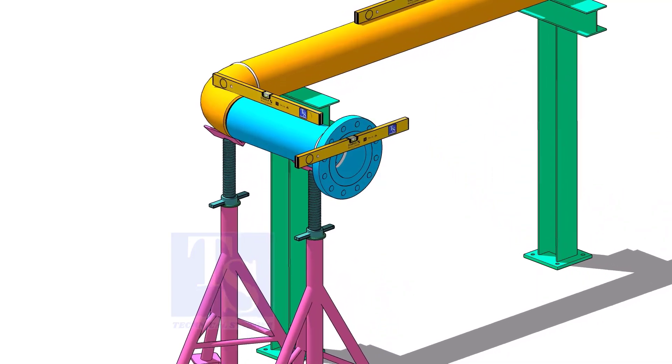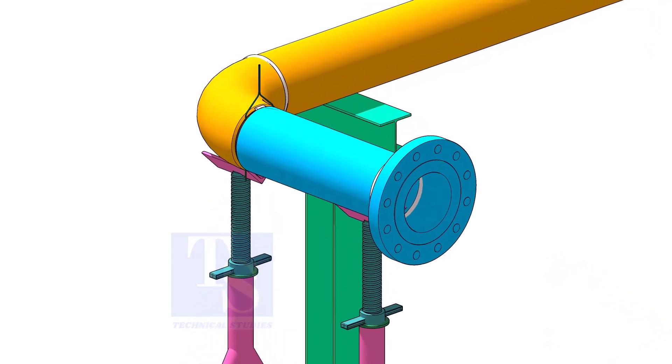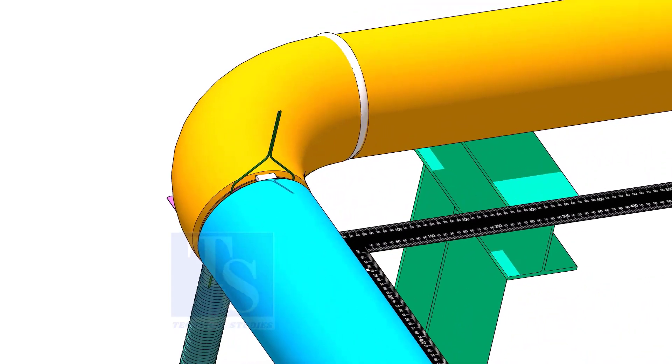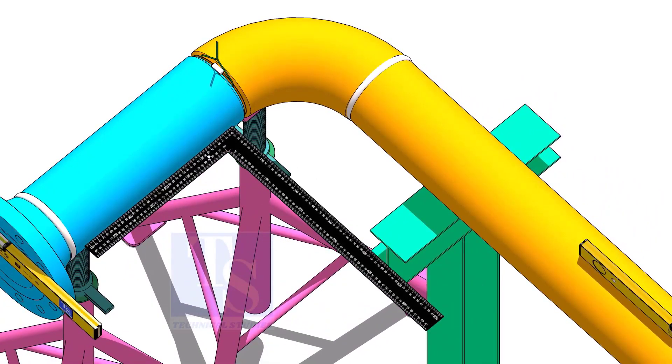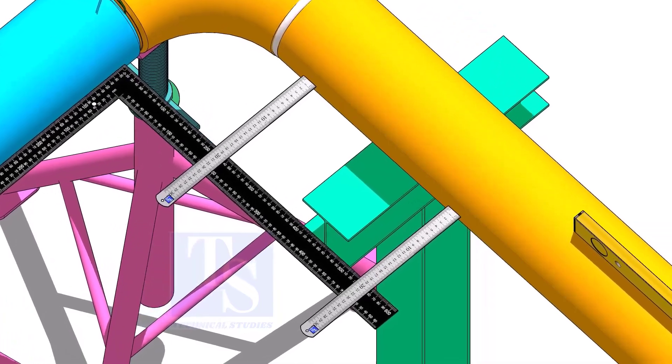Correct the whole plumbness and tack weld on the top and bottom side of the joint. Correct the squareness of the spools as shown and tack weld on the sides of the joint.